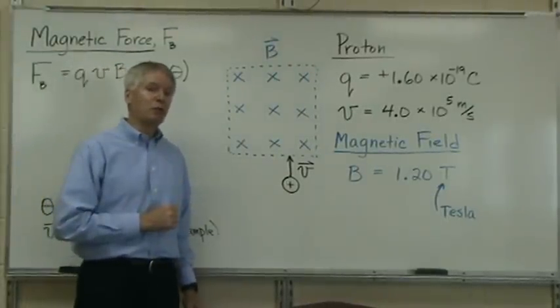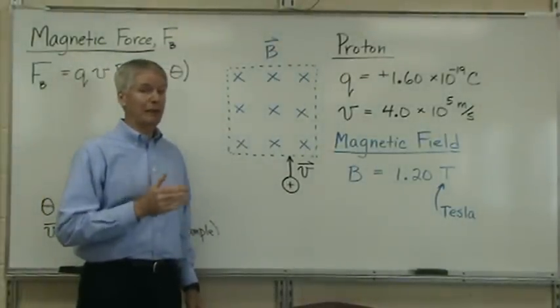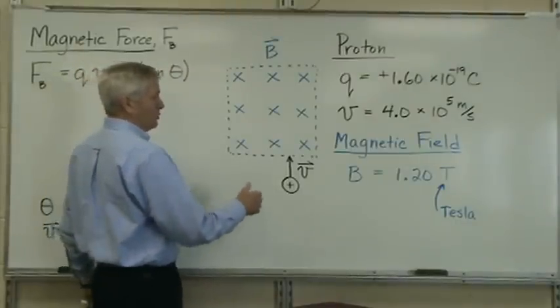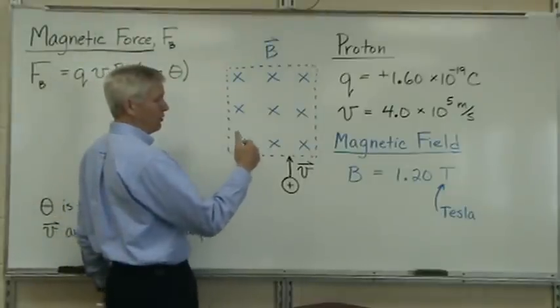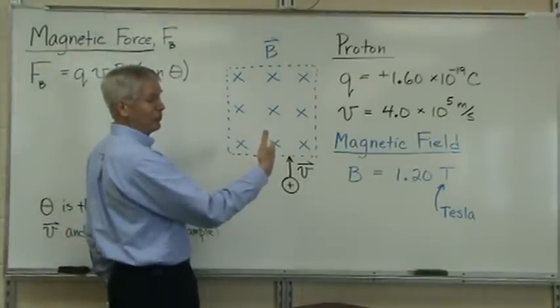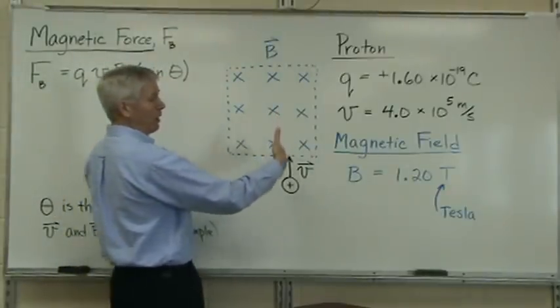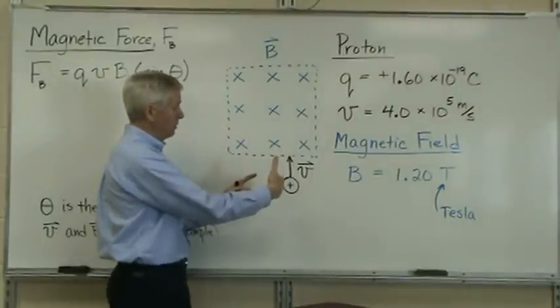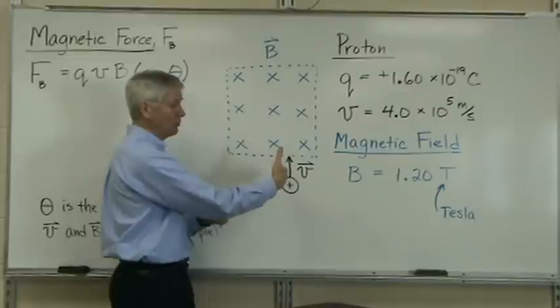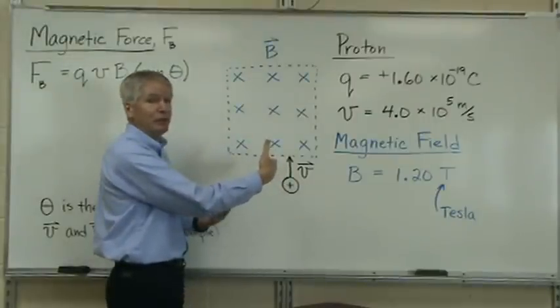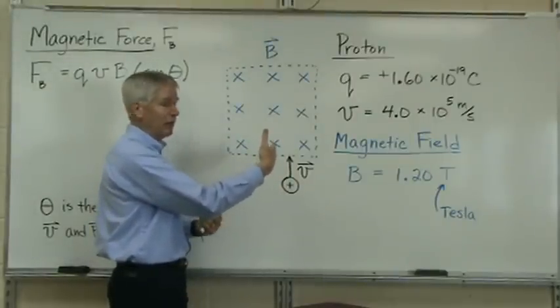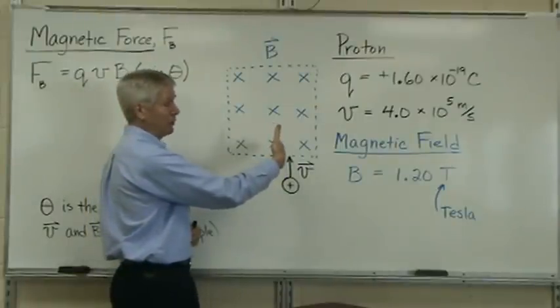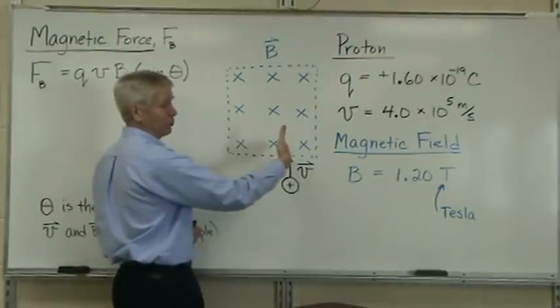So using the right-hand rule we can determine the direction of the magnetic force acting on the charged particle. We direct our fingers with the magnetic field, that's into the board. Our thumb will be directed in the same direction as the velocity of the charged particle. We have a positive particle, so we can use our right hand for this. Then the palm indicates the direction of the force that's being applied to it. So the magnetic force will be to the left.